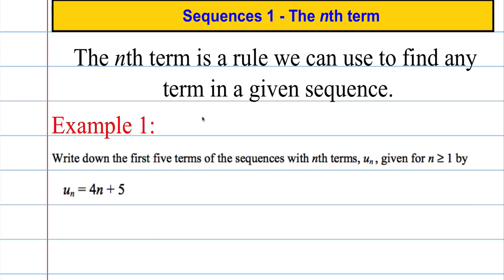The nth term is a rule that we can use to find any term in a given sequence. So suppose we have some nth term rule here which is 4n plus 5, and we're asked to write down the first five terms of the sequence u(n), given for n greater than or equal to 1.